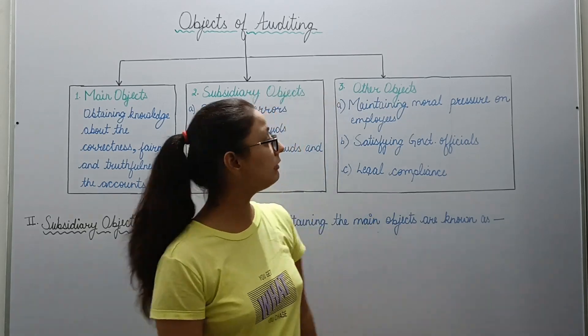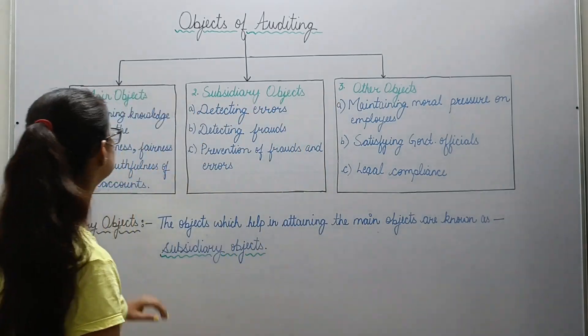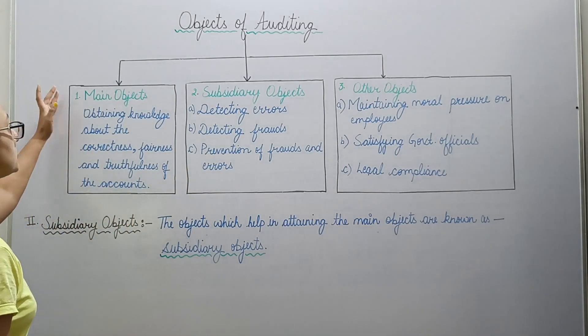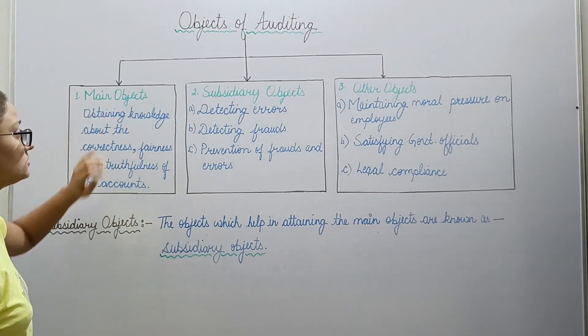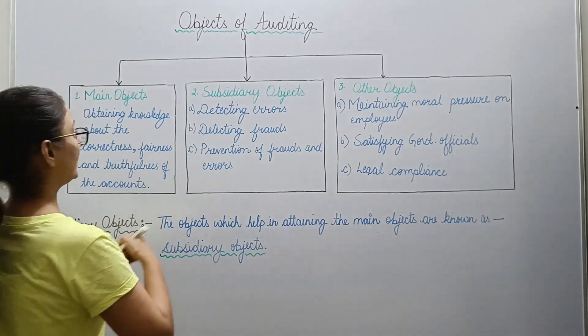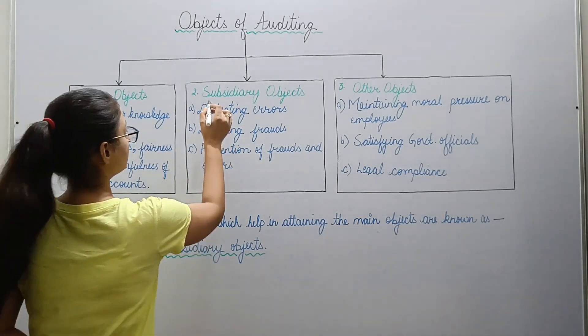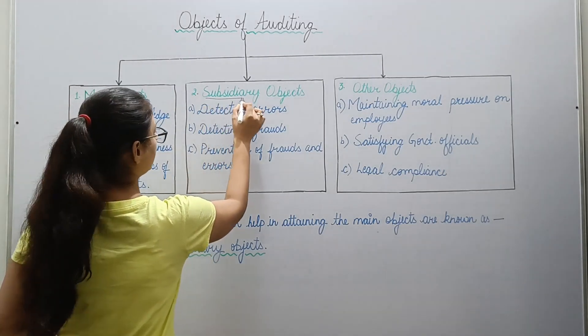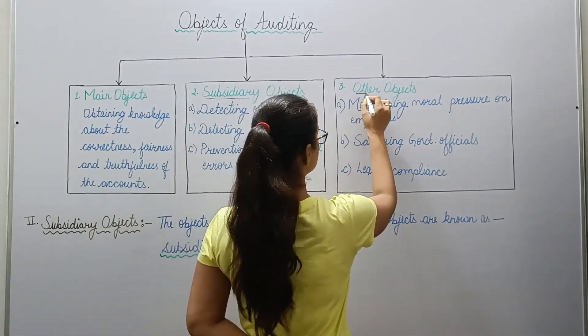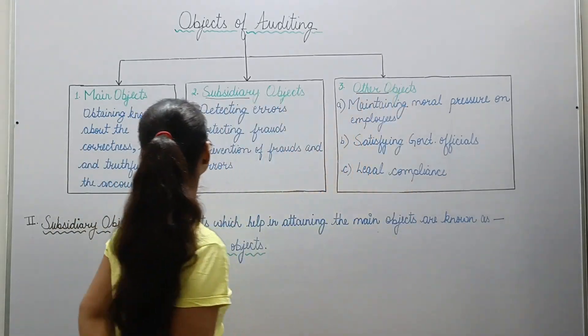Basically we are having three kinds of objectives. First one is main objective. Second one is subsidiary objectives. And the third one is other objectives.